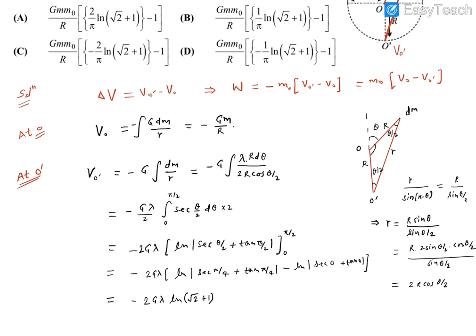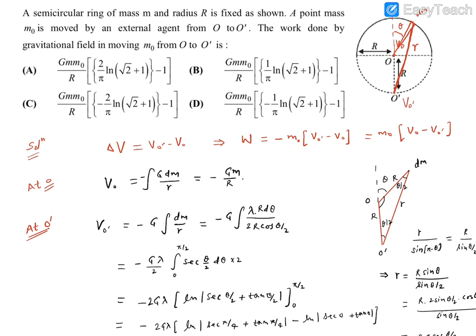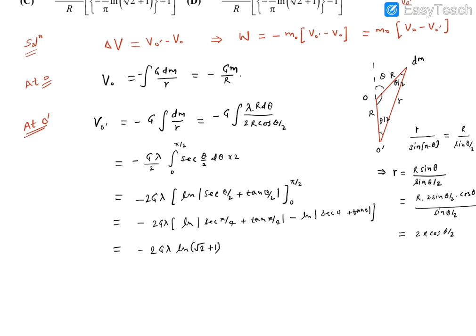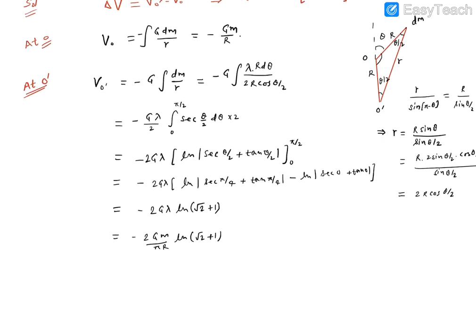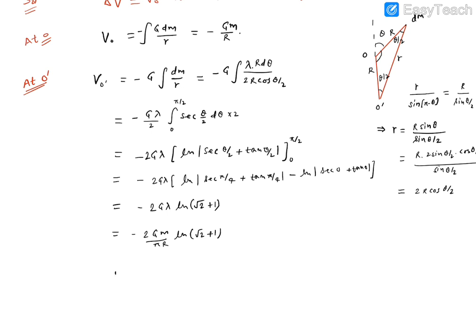Now lambda is mass per unit length, and the length of the semi-circular ring is pi R, so lambda equals M divided by pi R. Substituting, the potential at O dash becomes minus 2GM divided by pi R times ln(root 2 plus 1). This is V_O dash. We already have V_O equals minus GM over R.